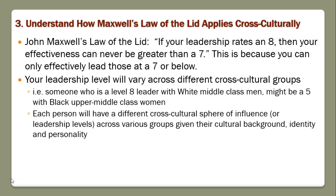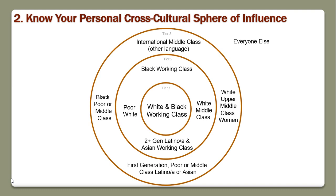Cross-culturally, how this applies is your leadership level is actually going to vary across different groups. Someone might be a level eight leader with white middle-class men, but they might be a five with black upper-middle-class women. Each person will have different cross-cultural spheres of influence or leadership levels across various groups given their cultural background, identity, and personality. For me, if I'm a level eight in my core group, I'd probably be a level seven at tier two or level six at tier three.